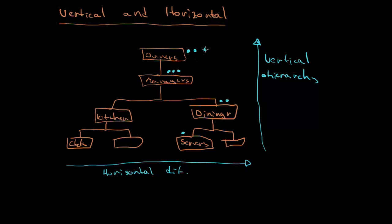And this is the vertical differentiation. It tells us about the distribution of authority and rank. What is this telling us?